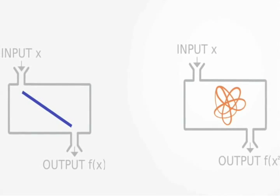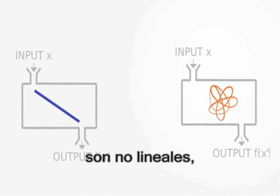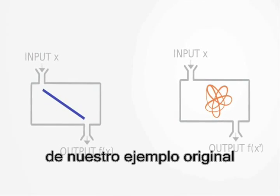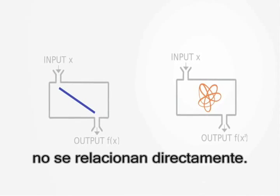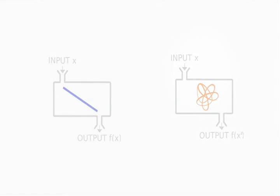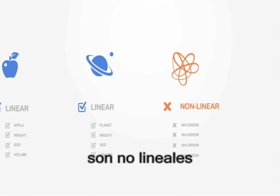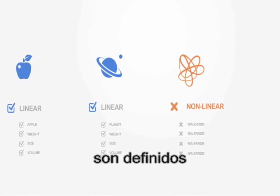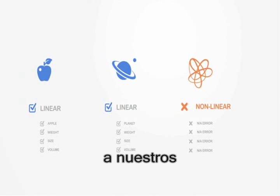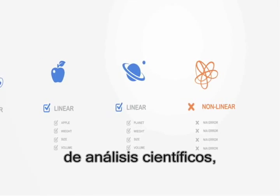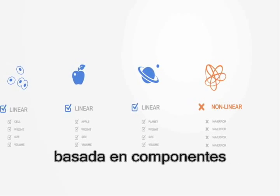The point to take away from this illustration is that complex systems are what is called non-linear, meaning unlike our original example with the billiard ball, cause and effect are no longer directly related. It is due to the fact that complex systems are non-linear and largely defined by their connections that make them unamenable to our traditional scientific methods of analysis, which often rely upon linear models and a component-based description of the world.